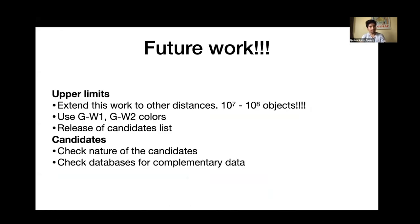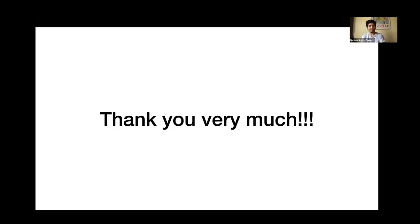So that would be all for the moment. But instead of having a conclusion slide, I would like to mention the future work that I intend to do. First, this work wants to cover all the stars in the whole Gaia release 2 and WISE sample. That means this number between 10 to the 7 and 10 to the 8 objects. We also plan to improve the upper limits by including the G minus W2 and G minus W1 colors. And once we have all the candidates, all the sources consistent with a specific type of Dyson sphere, we plan to release a candidate list. And also we plan to check the nature of the candidates by looking for auxiliary data on other databases. So that would be all. Thank you very much.